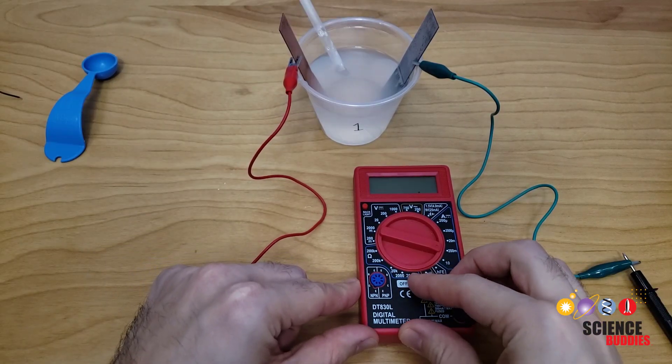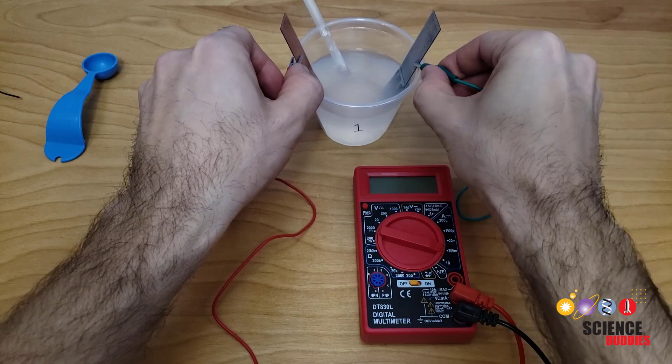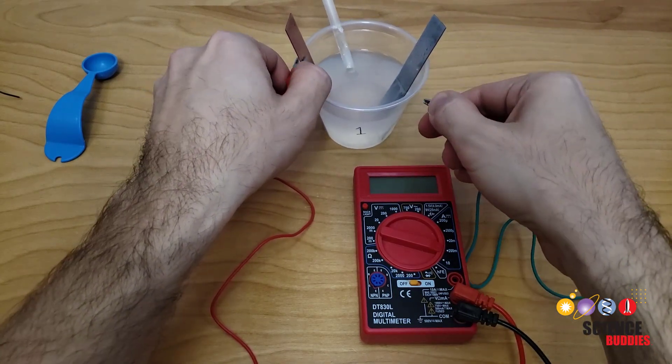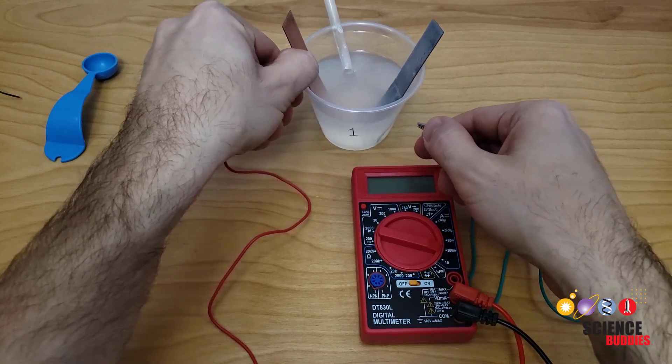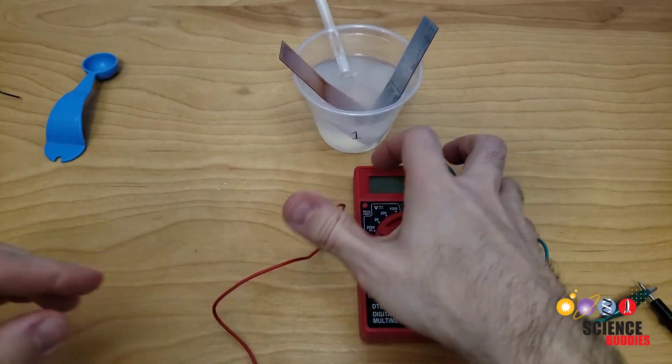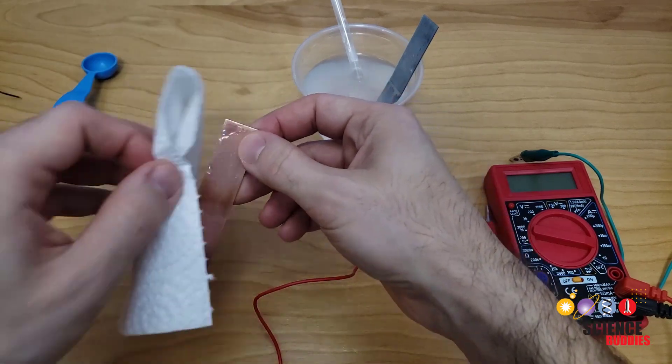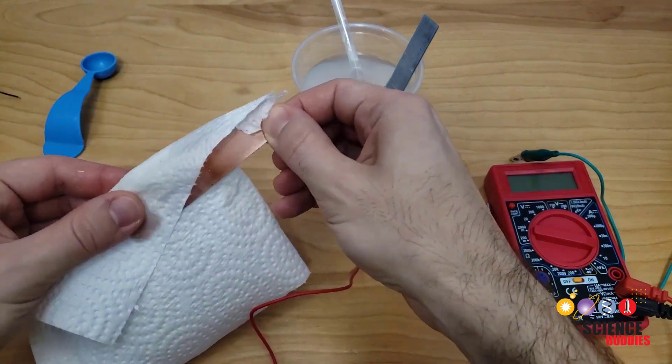When you're done, you can turn off your multimeter, disconnect the alligator clips, and disassemble your battery. You can take the electrodes out, pat them dry with a paper towel, and compare their appearance to what you saw at the beginning of the project. Make notes of any change in the appearance in your lab notebook.